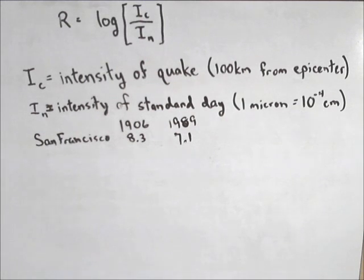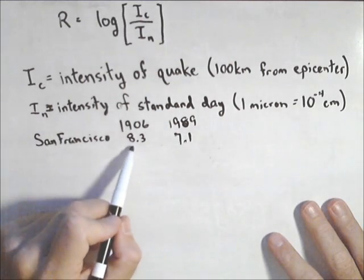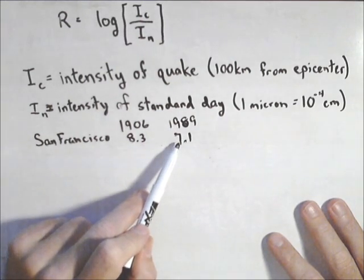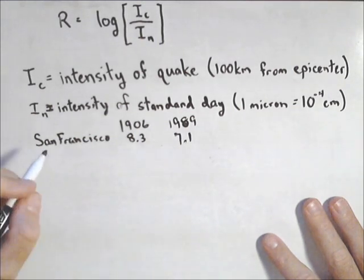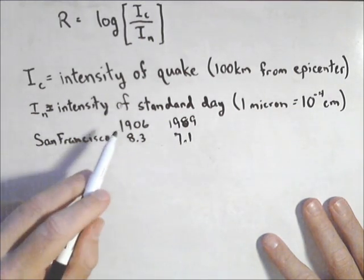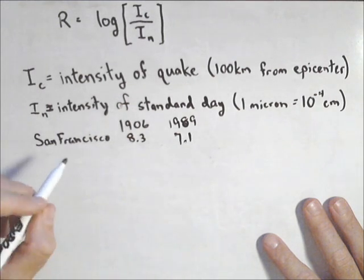So in San Francisco in 1906 they had a quake that measured 8.3. In 1989 they had a quake that measured 7.1. So let's find out how many times more intense the one in 1906 was than the one in 1989.